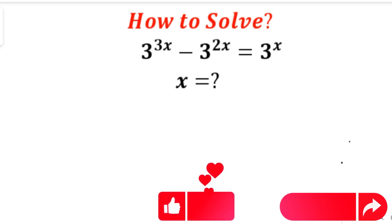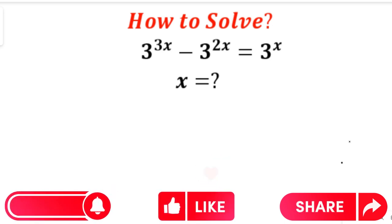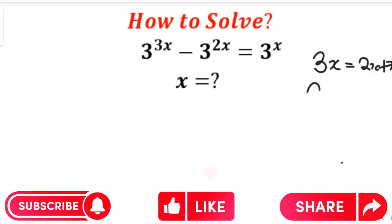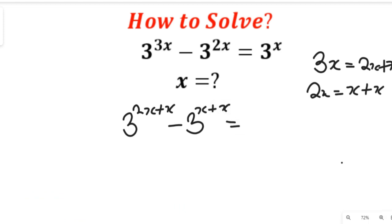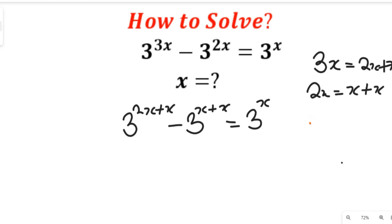Thank you very much. Let's see how we solve this question. To solve this question we are going to simplify the exponents first. From the exponents, you should note that 3 to the power of x can give us 2x plus x, and 2 to the power of x can be equal to x plus x. Now remember the law of indices: if you have a to the power of x plus y, this can be equal to a to the power of x multiplied by a to the power of y.